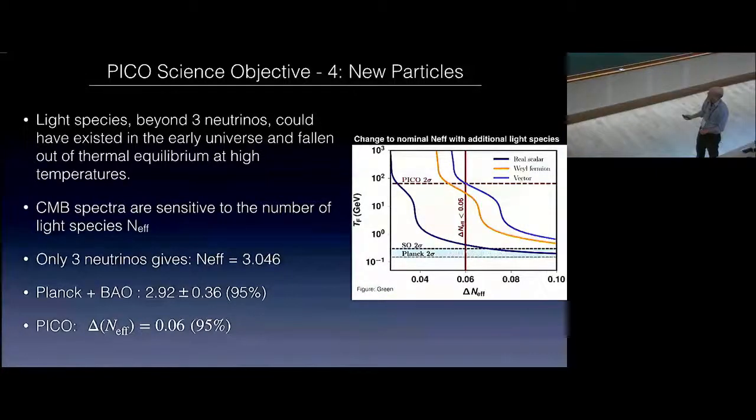Science objective number four, identifying new particles. Light species beyond the three neutrinos could have existed in the early universe and fallen out of equilibrium at some high temperature. The CMB spectra are sensitive to the number of light species, N_effective. Only three neutrinos gives N_effective 3.046, and this is the current constraints from Planck, 95%. This is a plot of the decoupling temperature from going from low temperature to high temperature. This is the QCD phase transition. This is the departure from the nominal N_effective. Planck at 0.36 is somewhere around here. Pico should be able to do 0.06 at 95%. And here is Planck.